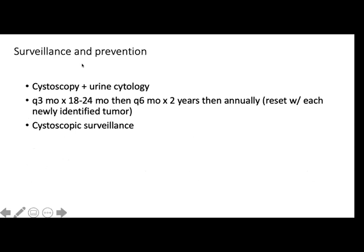For surveillance and prevention: cystoscopy and cytology at 3 months, then from 18 months to 14 months, then Q6 for two years, then annually. If something is detected, you do TURBT again and go back to the algorithm. Flexible cystoscopy has essentially replaced rigid cystoscopy for surveillance in men in North America — convenient to look for recurrence of bladder cancer.